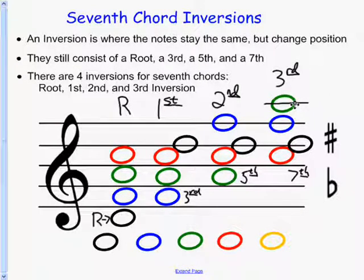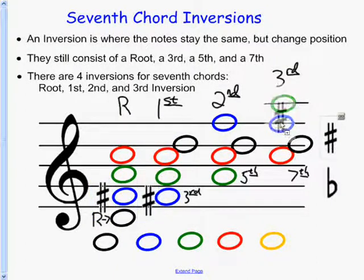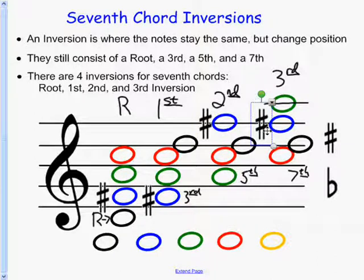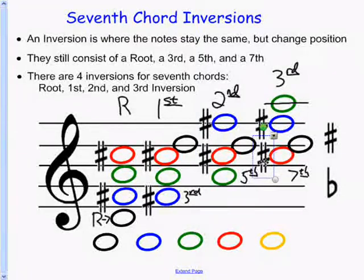So that is the idea of inversions. Build the root first before you do an inversion so you don't forget to put in notes. For instance, if we did a dominant seven, I'd have to make sure all the Fs were sharp. If I did a major seventh, I'd have to make sure all the Cs are also sharp. That's why I say build the root first — it's much easier to structure it once you have everything in place.